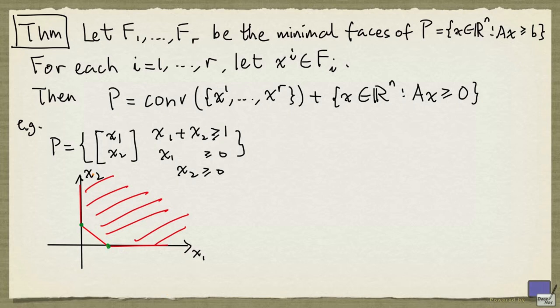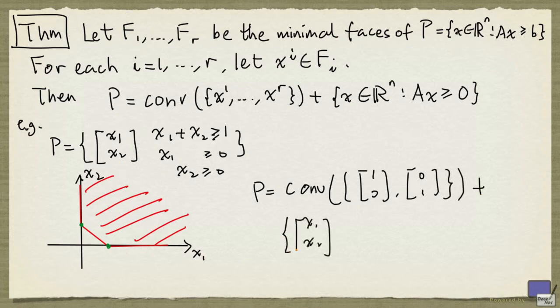Now the minimal faces of this polyhedron are this here and this here. And so this theorem says P is the convex hull of x^1, x^2 plus its recession cone, which is simply the set of x1, x2 satisfying x1 plus x2 greater than 0, x1 greater than 0, and x2 greater than 0.